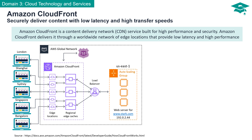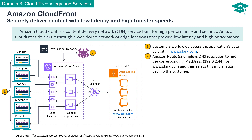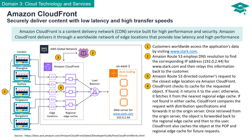Here's how Amazon CloudFront works in delivering content efficiently. Users worldwide access the application's data by visiting www.stark.com. Amazon Route 53 uses DNS resolution to find the corresponding IP address — for example, 192.0.2.44 — and Amazon Route 53 directs the user's request to the closest edge location through Amazon CloudFront. CloudFront first checks its cache for the requested object; if found, it quickly delivers it to the user. If not found in the cache, CloudFront fetches it from the nearest regional edge cache. If the object is not in any cache, CloudFront analyzes the request based on its distribution settings and forwards it to the origin server. Once retrieved, the object is sent back through the regional edge cache to the user, and CloudFront stores a cached copy at the point of presence for future requests.